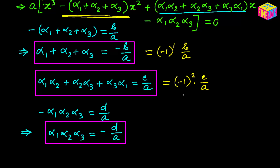Think about it: negative 1 squared equals positive 1, so that gives positive c over a, which is exactly what we have. And the product of all three roots can be written as negative 1 cubed times d over a. You are starting to see a pattern: as we take higher and higher degree polynomials, the relationship between the roots and coefficients follows this pattern. Next let's take a quartic equation and see how this works out.